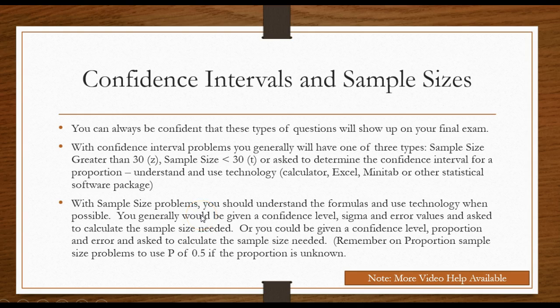With sample size problems, you should understand the formulas and use technology when possible. You generally would be given a confidence level, sigma, and error values and asked to calculate the sample size needed. Or you could be given a confidence level, a proportion, and an error and asked to calculate the sample size needed. And remember, with these type questions, when they use the word within three books, or within two, or within five percent, the error is usually preceded, often preceded by the word within. Remember on the proportion sample size problems, if they do not give you P, you use a P of 0.5 if it is unknown.